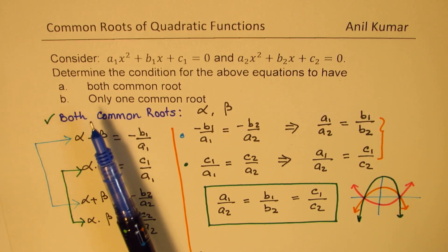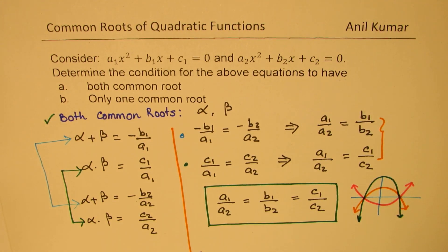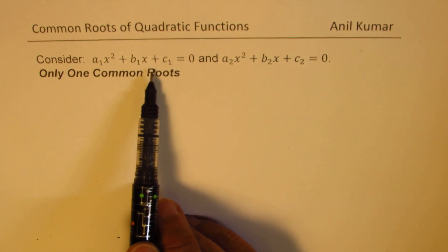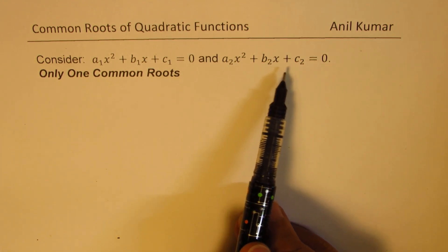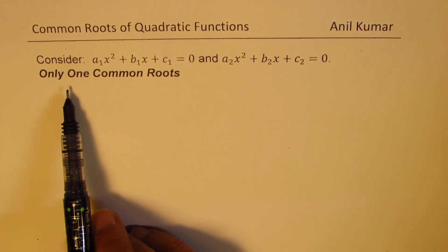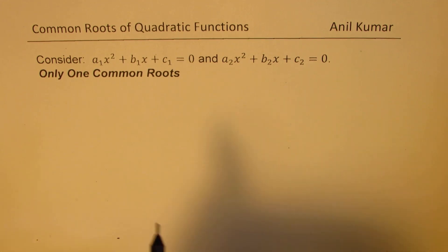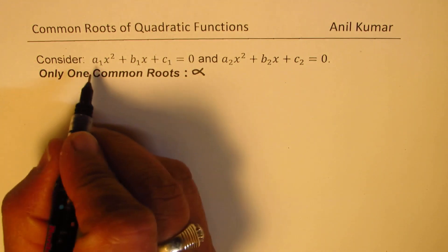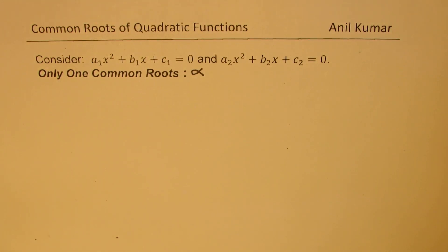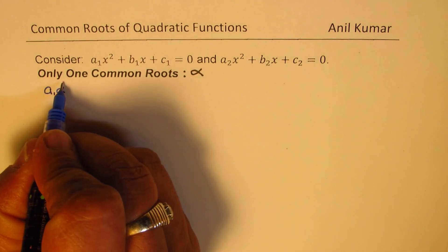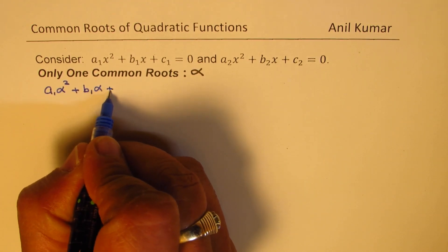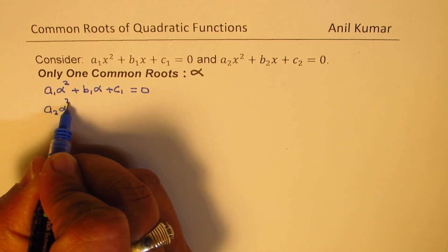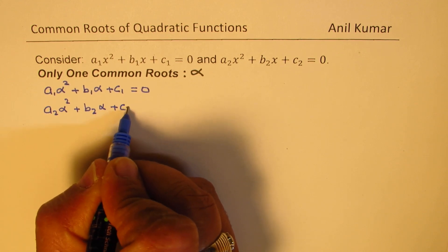Now let's get into part b, which is only one common root. We consider the same two quadratic equations: a1x² + b1x + c1 = 0 and a2x² + b2x + c2 = 0. We are looking for the condition when there is only one common root. Let this common root be alpha. Since alpha is a root, we can write a1α² + b1α + c1 = 0 and a2α² + b2α + c2 = 0.